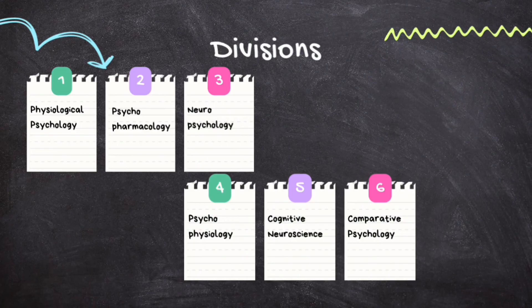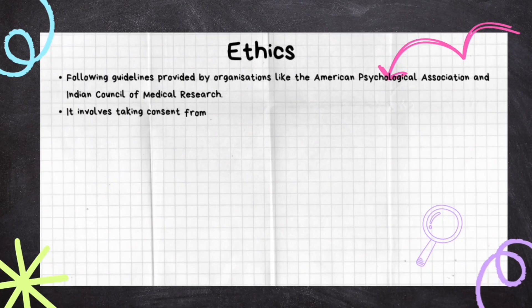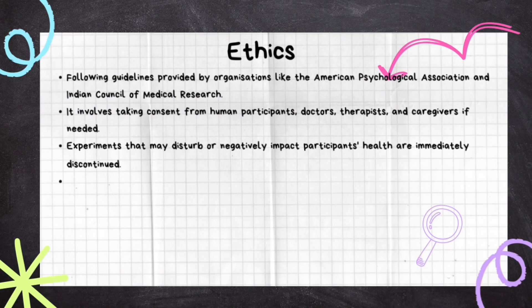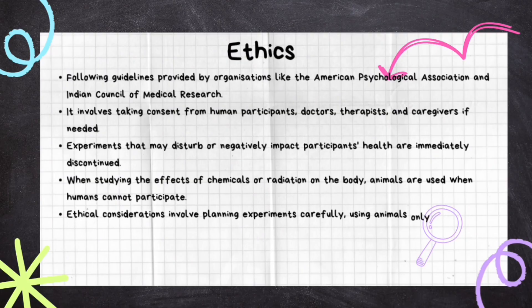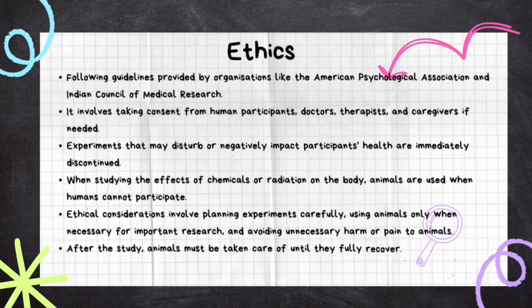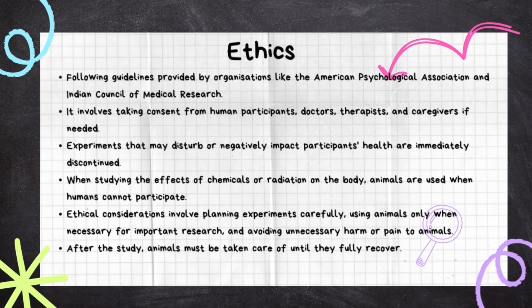Now let's look at ethics. Research ethics in biopsychology is all about following guidelines to ensure that researchers treat human and animal participants ethically. These guidelines are provided by organizations like the American Psychological Association (APA) and the Indian Council of Medical Research (ICMR). When human participants are not possible, we use animals — but even then, we must be careful and considerate, planning experiments well and only using animals when truly necessary. Most importantly, we must never cause unnecessary harm or pain to the animals, and after the study we take care of them until they fully recover.